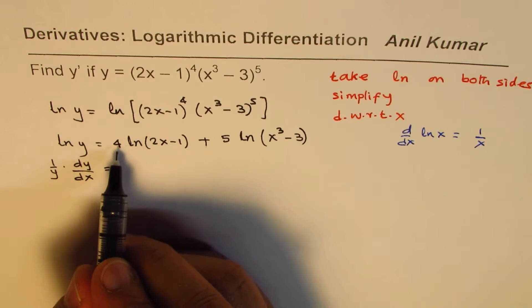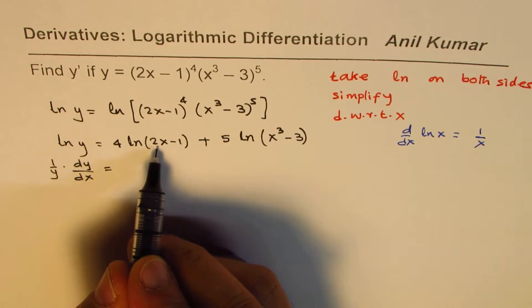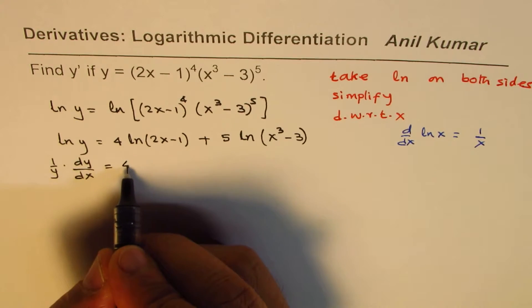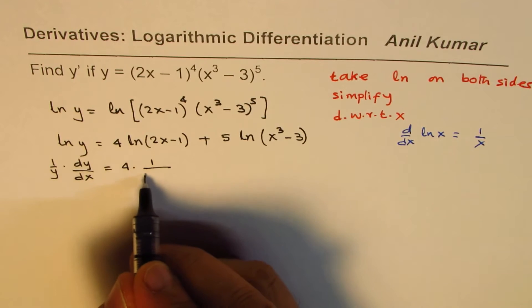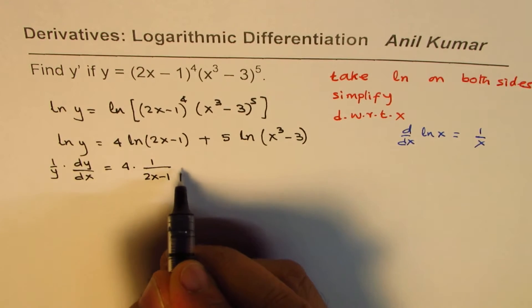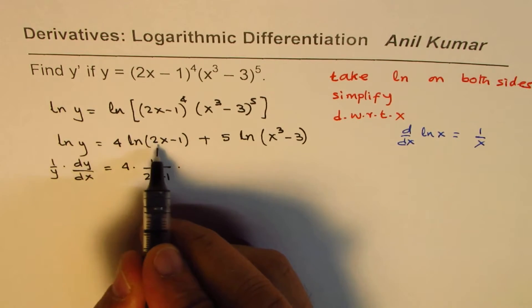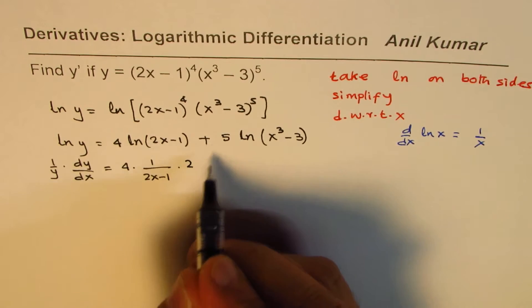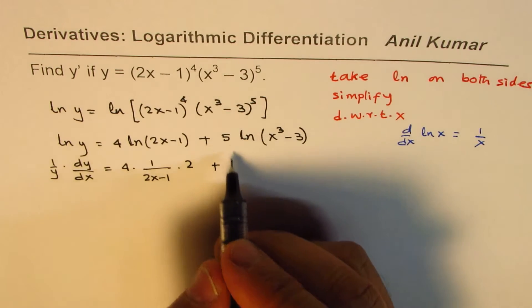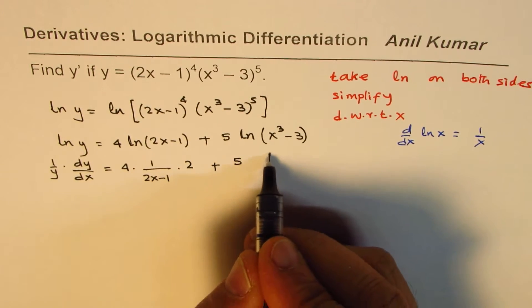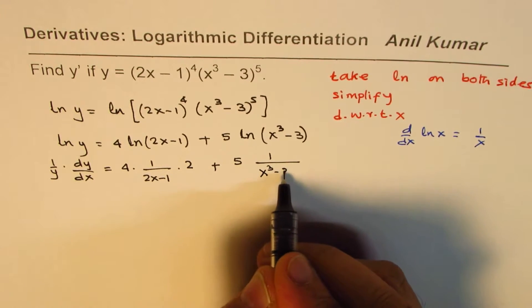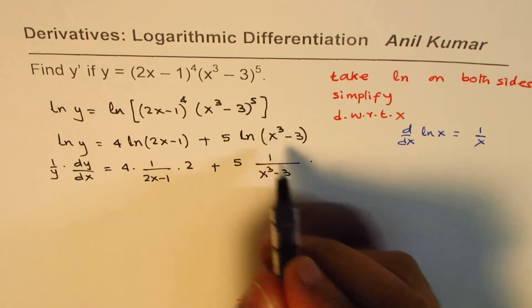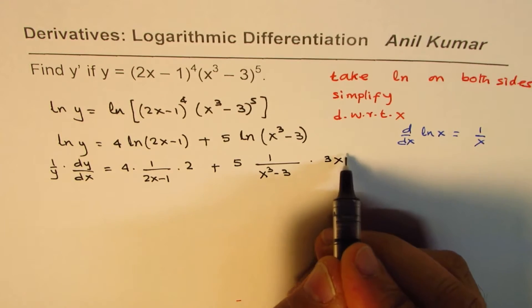on the right side, 4 times ln(2x - 1). 4 is a constant. Derivative of this is 1/(2x - 1) times the derivative of inside function, which is 2, plus 5 times 1/(x^3 - 3) times derivative of x^3, which is 3x^2.